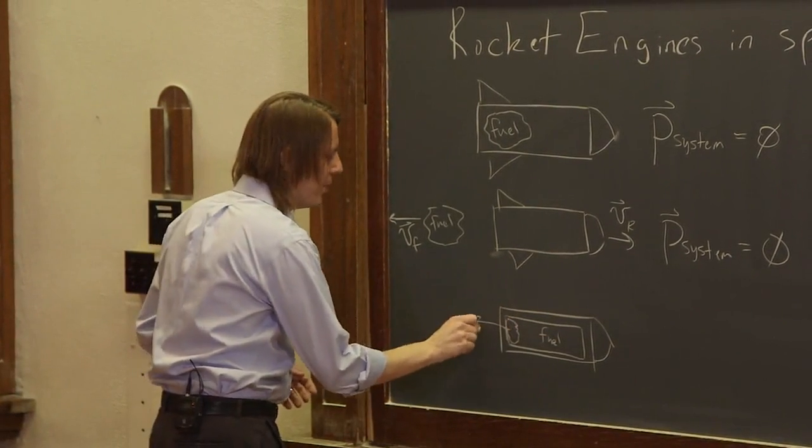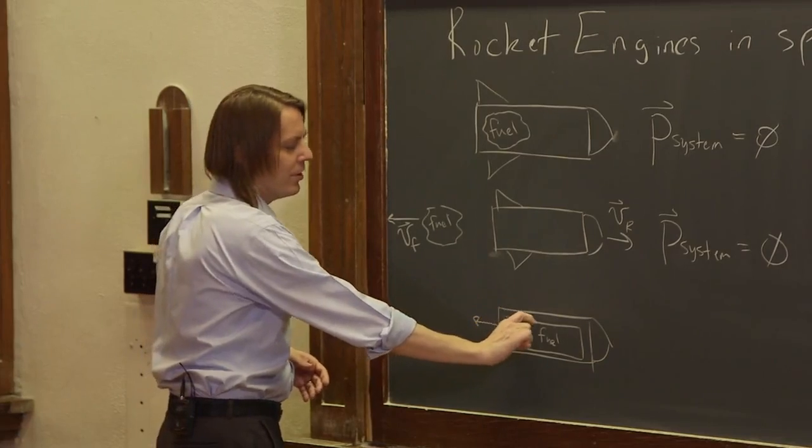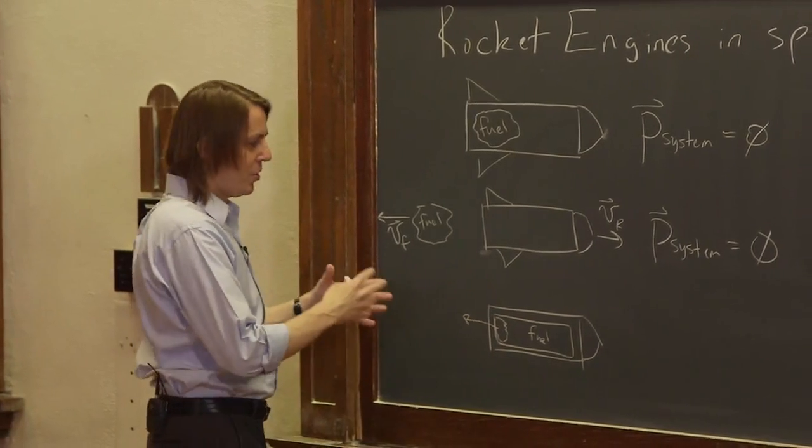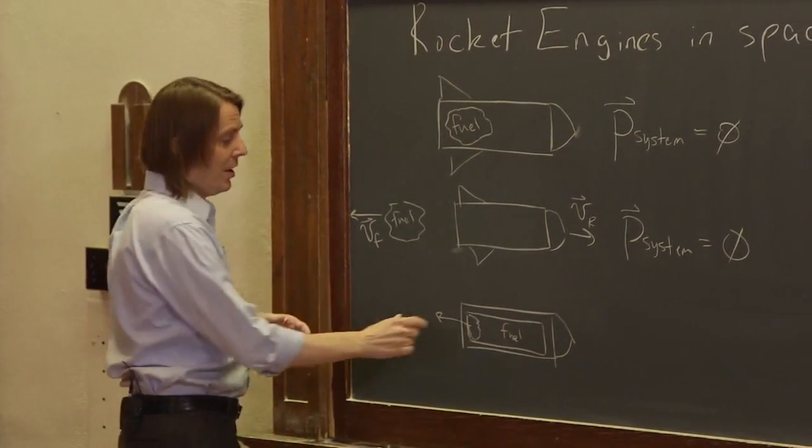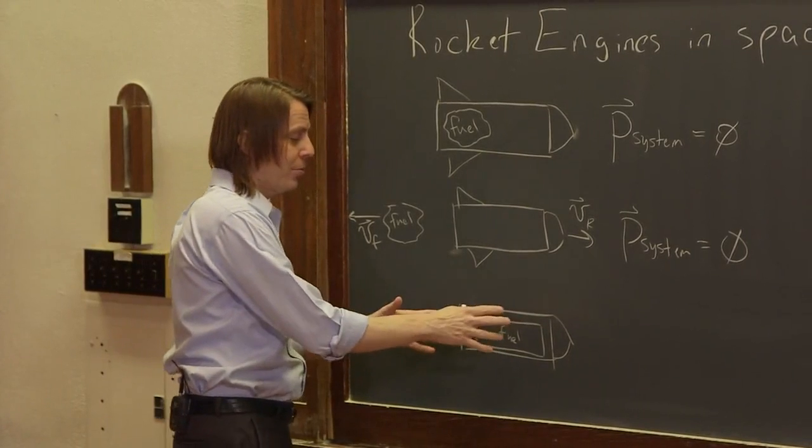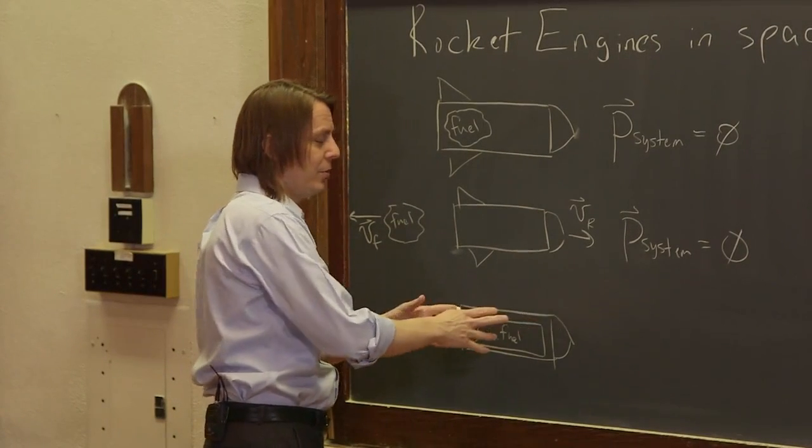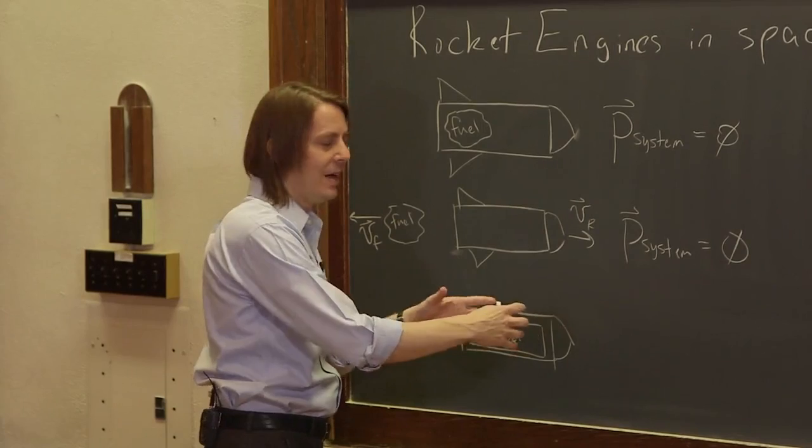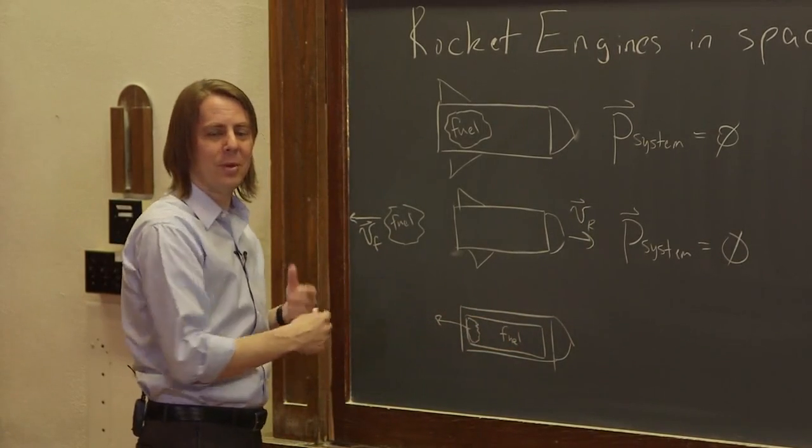But as it burns, as it comes out, a lot of the fuel is solid and it's still in the rocket. So in the early stages of the burn, a lot of the mass of the fuel is part of the rocket that was accelerated or that was pushed or given momentum this way, and as it burns, then it comes out. So that makes it more complicated.